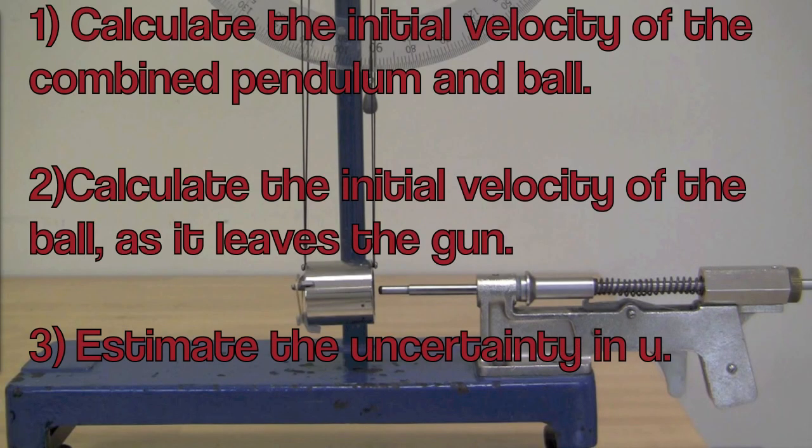After that, calculate the combined velocity of the pendulum and the ball, and then get the initial velocity of the ball as it leaves the gun.